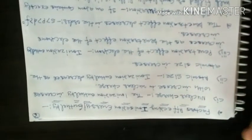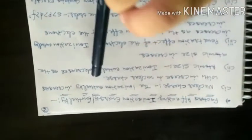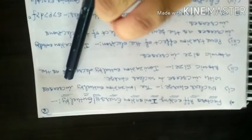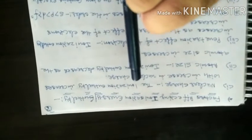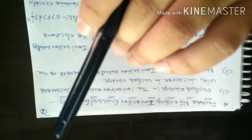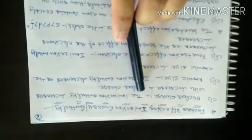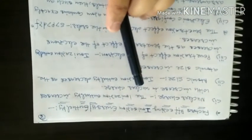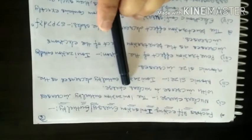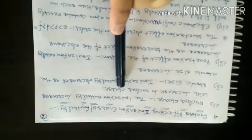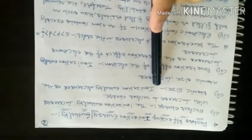Now let's discuss the factors that affect ionization energy. The first factor is nuclear charge. Ionization enthalpy generally increases as nuclear charge increases, because the force of attraction between the nucleus and the electron becomes stronger, so more energy is needed to remove the electron.